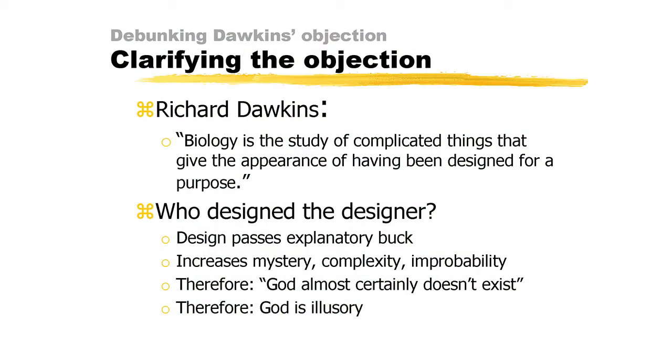It's important to begin by knowing that Dawkins acknowledges that there is a complexity to nature which looks designed. Dawkins has famously stated this: biology is the study of complex things that appear to have been designed for a purpose. But, Dawkins emphasizes, the design is merely apparent.